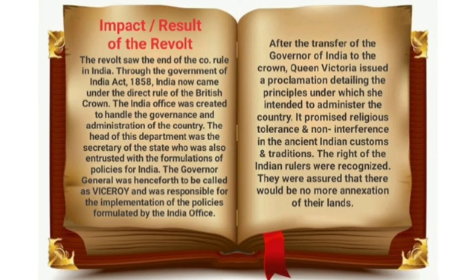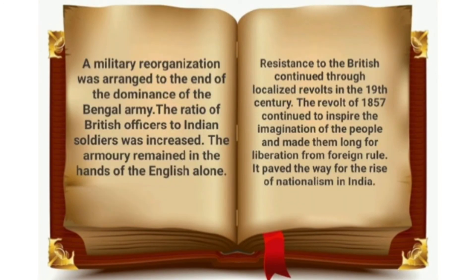The great uprising of 1857 was an important landmark in the history of modern India. The revolt marked the end of the East India Company's rule — India now came under the direct rule of the British Crown, announced by Lord Canning at a Durbar in Allahabad in a proclamation issued on 1st November 1858 in the name of the Queen. Indian administration was taken over by Queen Victoria, which in effect meant the British Parliament. The Governor-General's office was replaced by that of the Viceroy. The Doctrine of Lapse was abolished, and the right to adopt a son as a legal heir was accepted. The Revolt of 1857 paved the way for the future struggle for freedom in India.